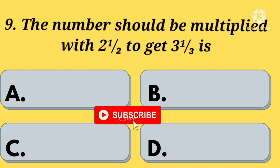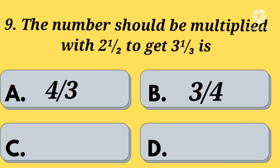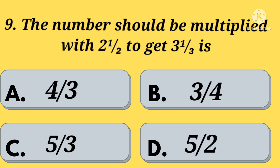The number that should be multiplied with 2 and 1 by 2 to get 3 and 1 by 3 is — Option A: 4 by 3. Option B: 3 by 4. Option C: 5 by 3. Option D: 5 by 2. Your time starts now.